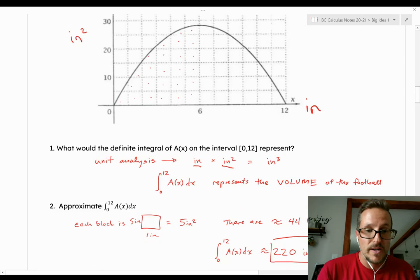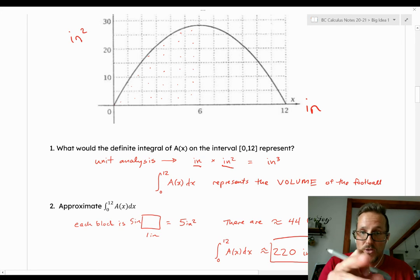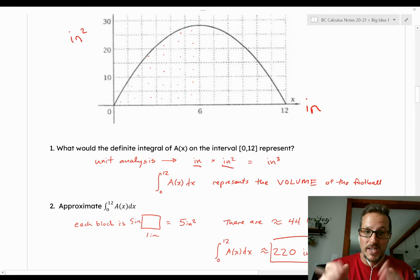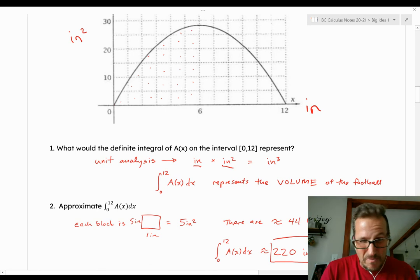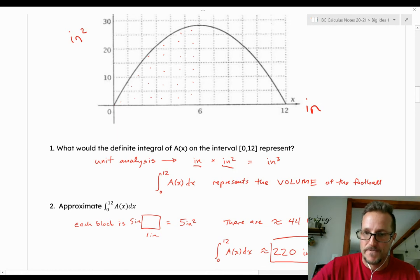So if we want to approximate the value of the definite integral from 0 to 12 of A(x) with respect to X, we need to notice that each block that you count there is a block that is 1 inch by 5 square inches. So each block is representative of 5 square inches. I did some counting and some estimating, and I thought that there was about 44 total blocks, which multiplied by 5 is about 220. But that's just an estimate that I came up with. You might have come up with a different estimate.